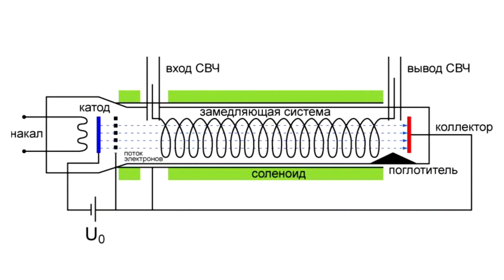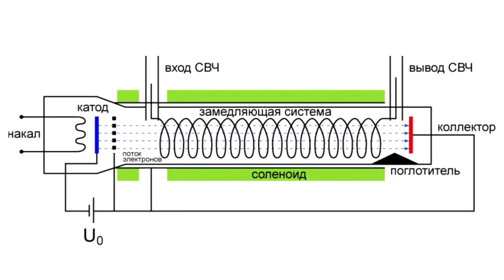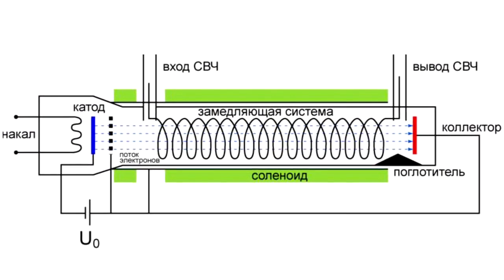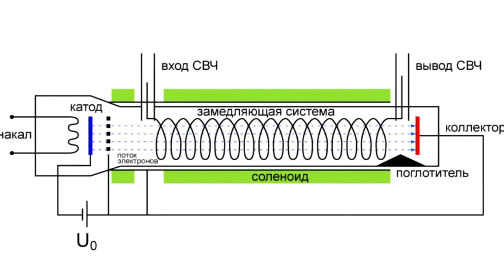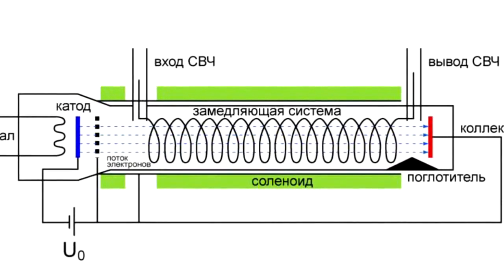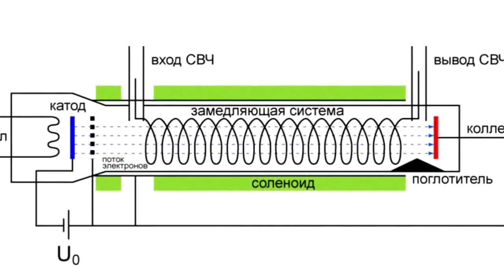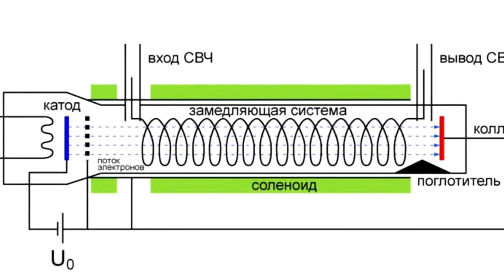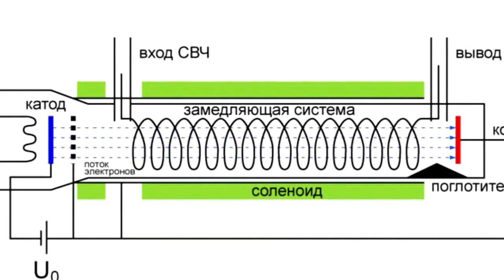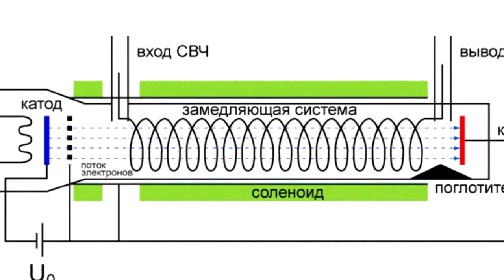The electron gun creates a directed flow of electrons of a certain density. The system of focusing and formation of the electron flow is implemented with the help of static magnetic and electric fields. As a result of the longitudinal magnetic field exposure, the necessary cross-section of the electron flow is provided.